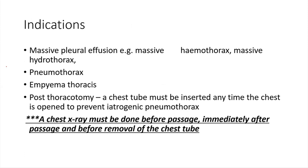Indications for passing a chest tube include massive pleural effusion such as massive hemothorax or hydrothorax, pneumothorax, and empyema thoracis. Post-thoracotomy, a chest tube must be inserted whenever the chest is open to prevent iatrogenic pneumothorax. A chest x-ray must be done before passage, immediately after passage, and before removal of the chest tube.